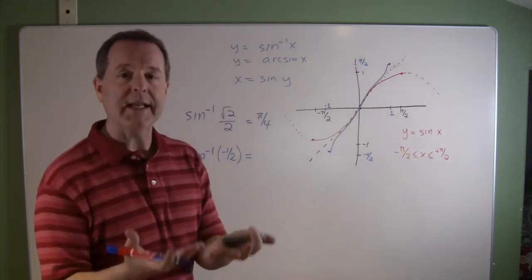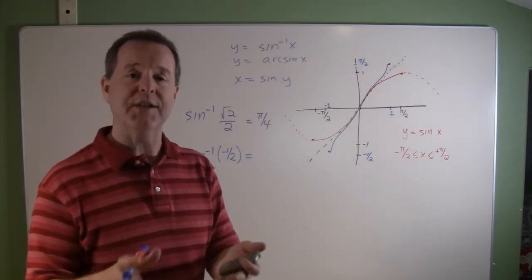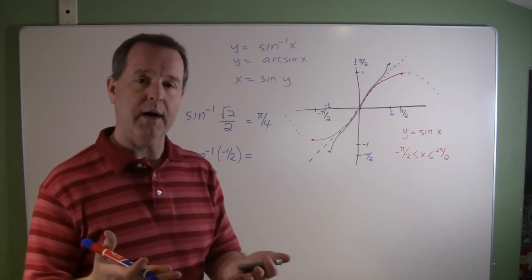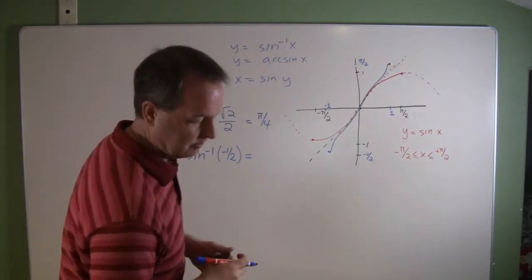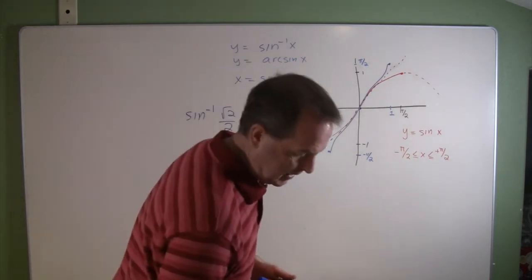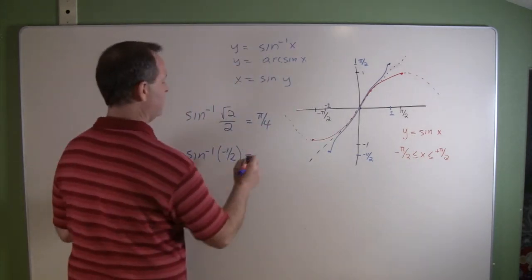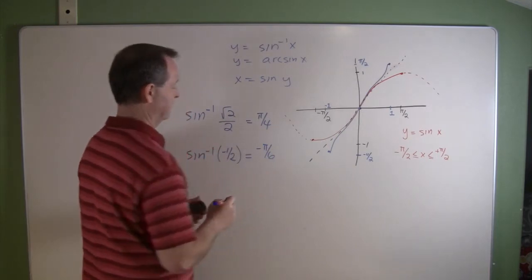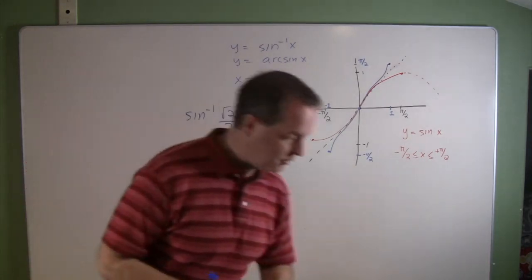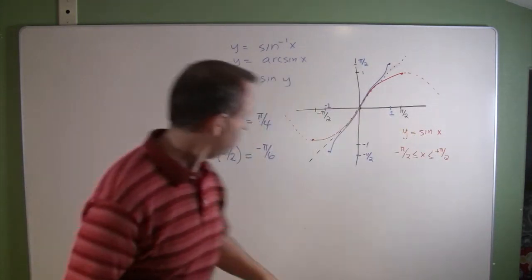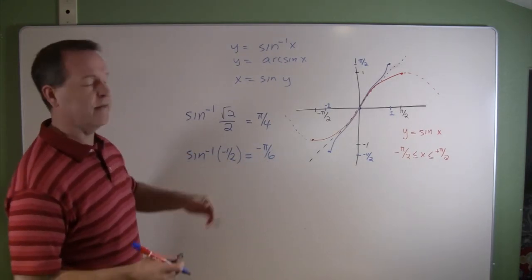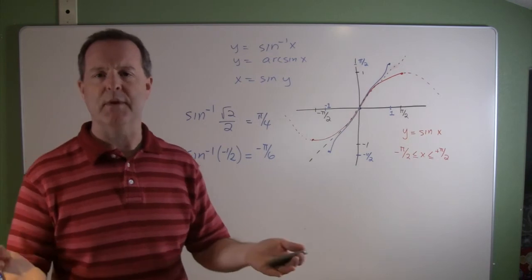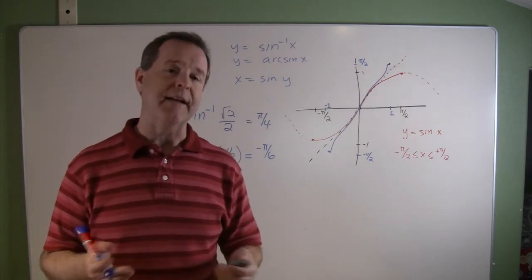So which angle produced a sine of negative 1 half? And if we remember those key values again, the ones I've asked you to kind of memorize, be aware of, maybe to have them written down on a table that you refer to all the time. We remember that the sine of negative 1 half was minus pi sixth. So the angle minus pi sixth produces a sine of negative 1 half. So there's a couple examples of how to kind of think about inverse sines.